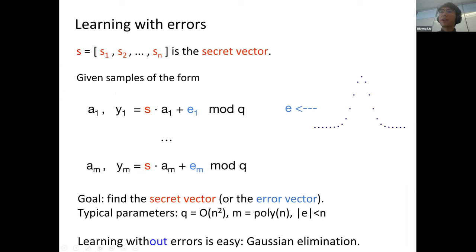The Learning With Errors (LWE) problem asks to find a secret vector s. You are given an oracle that you can query polynomially many times; each query returns a random linear combination of the secret plus a small amount of noise. More formally, each query gives a_i and y_i, where y_i is the inner product of the random vector a_i with the secret s plus some noise. The goal is to recover the secret vector by querying this oracle polynomially many times.